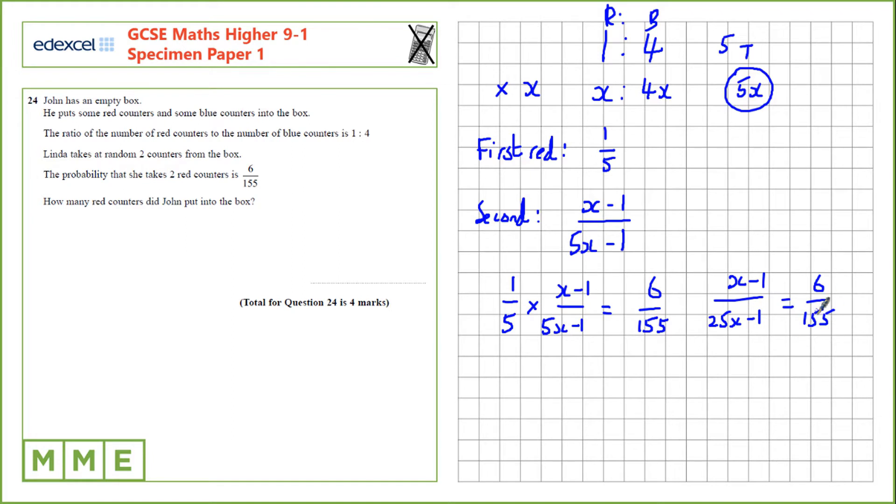Now, let's multiply by this side of the fraction and by this side of the fraction. That gives us 155 times x minus 1 is 6 times 25x minus 1.